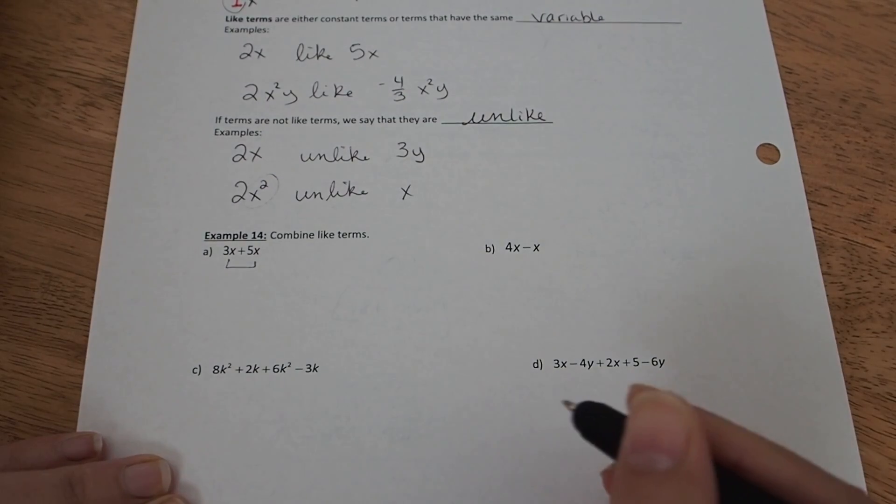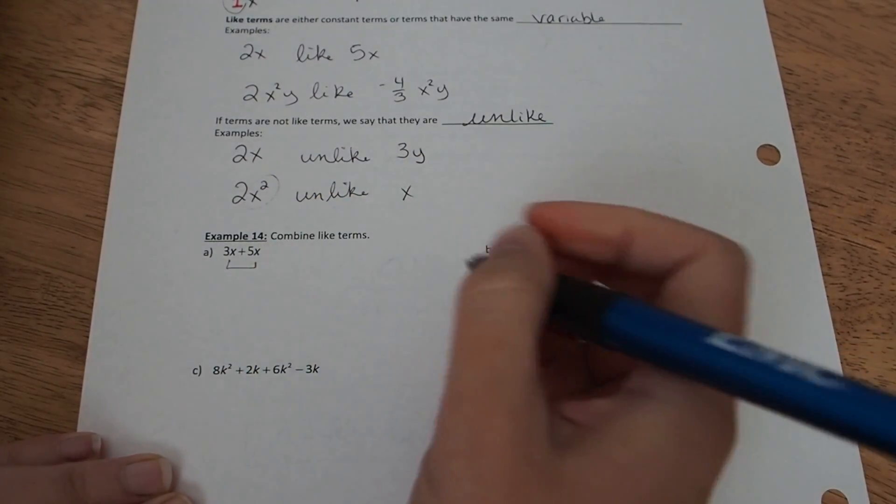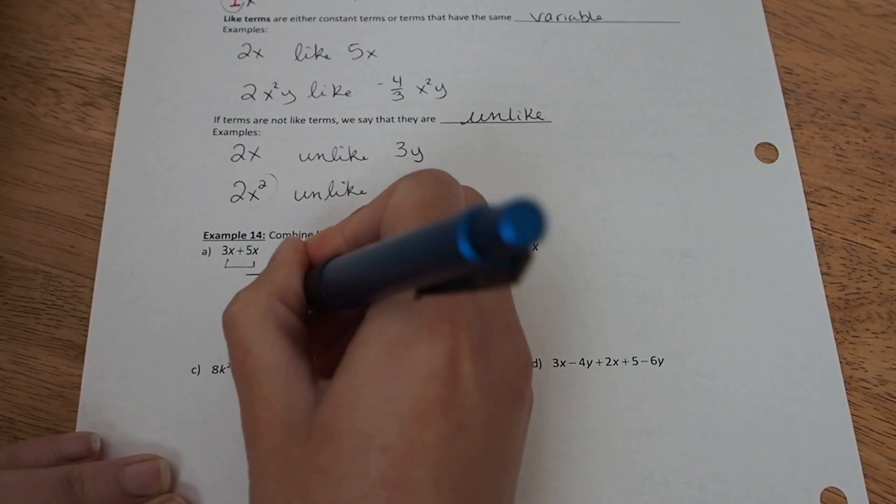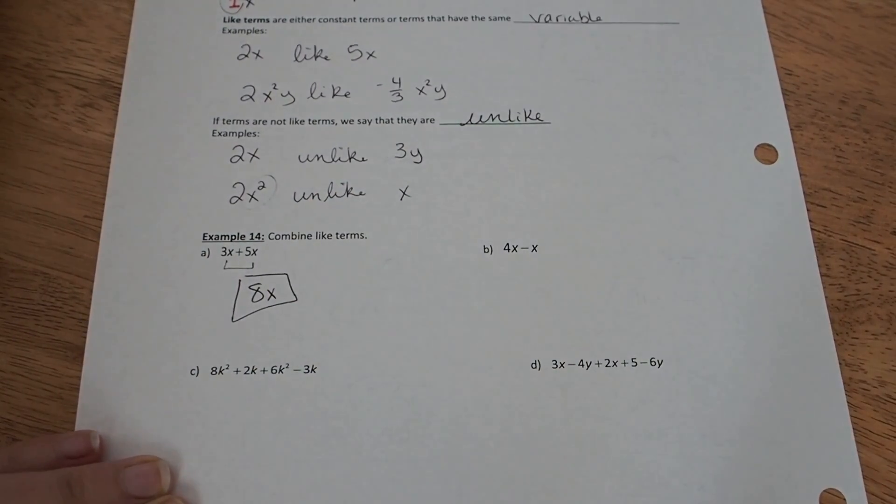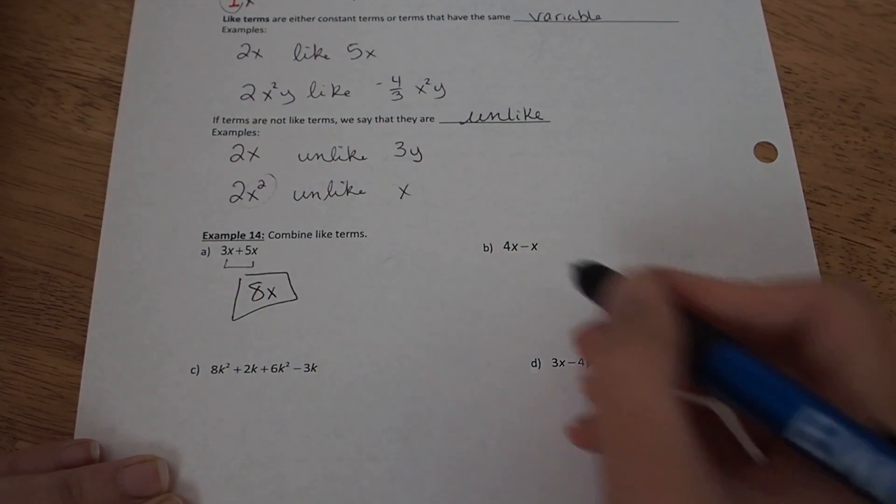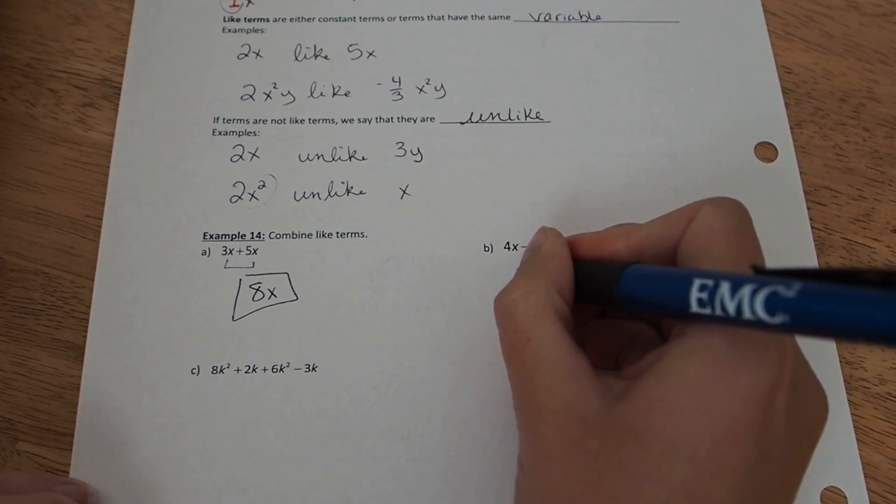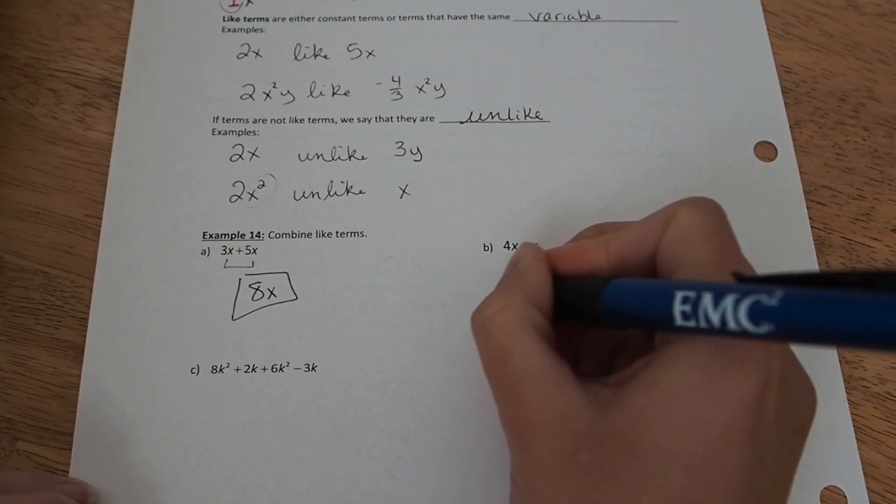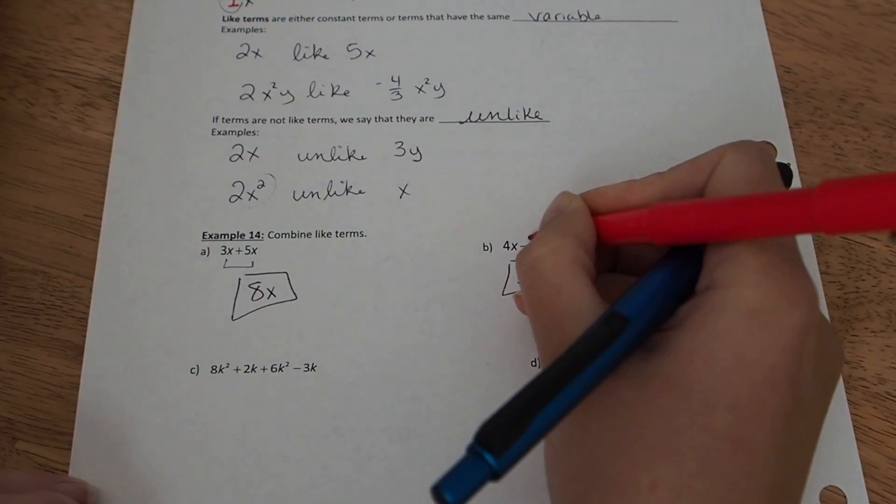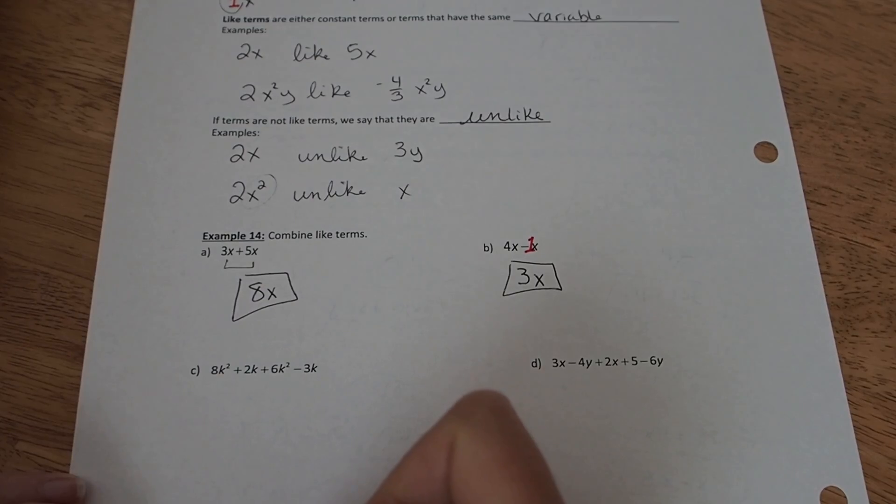So 3x and 5x are like, so they can be added together to get 8x. 3x plus 5 more x adds to 8x. In part b, 4x minus x. If you're going to take one of the x's away, you're going to be left with just 3x. So that invisible 1 is the coefficient right there. 4 minus 1 is 3, so 3x left.